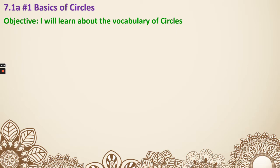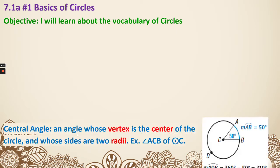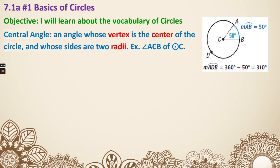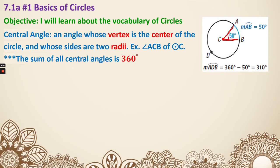Next, we have more vocabulary to look at. First, central angle: an angle whose vertex is the center of the circle, and the sides are two radii. The central angle is the angle that uses the center as the vertex. The sum of all central angles is 360 degrees.